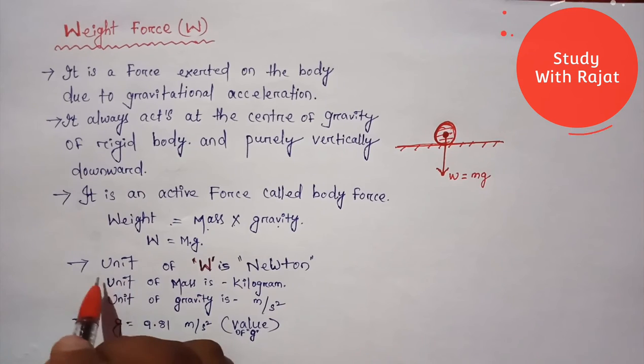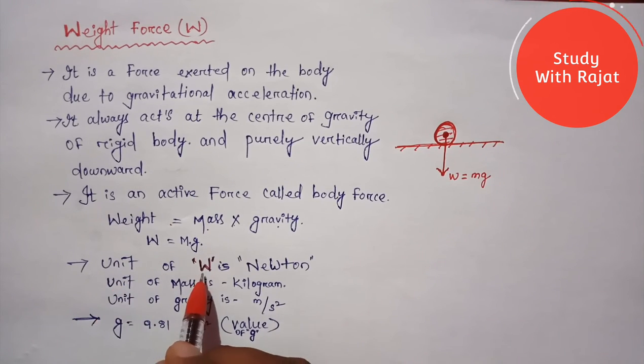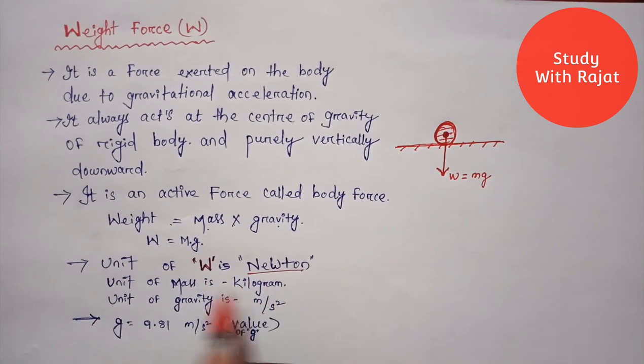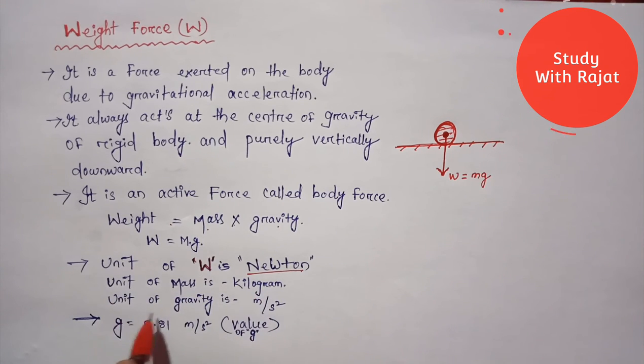The unit of weight is Newton. As well as the unit of mass is kilogram and the unit of gravity is meter per second square. So always remember that the gravity G is equal to 9.81 meter per second square, which is the true value, the universal true value for the G. G is the gravity force.